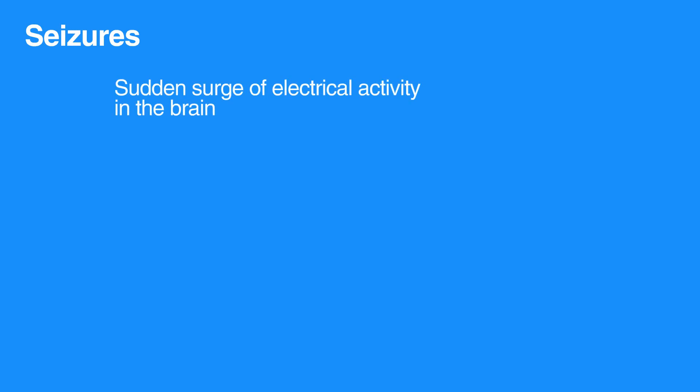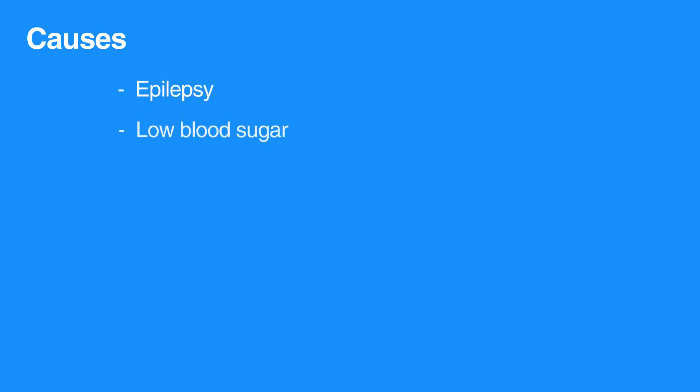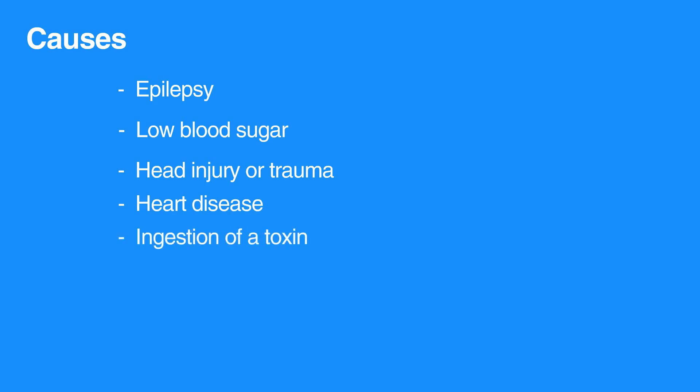A seizure is a sudden surge of electrical activity in the brain. Seizure-like activity is caused by epilepsy, low blood sugar, head injury or trauma, heart disease, or ingestion of a toxin or heart-related illness.